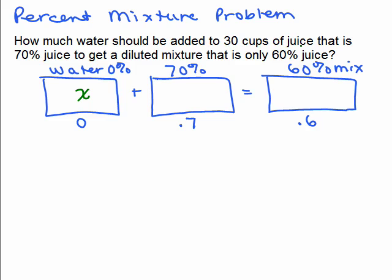But do we know how much of the 70% mixture there is? Yes, 30 cups of the 70%. So we know there's 30 cups here. So in the final mixture, you're mixing X cups of water with 30 cups of the original juice. So you'll have X plus 30 cups in the mixture.